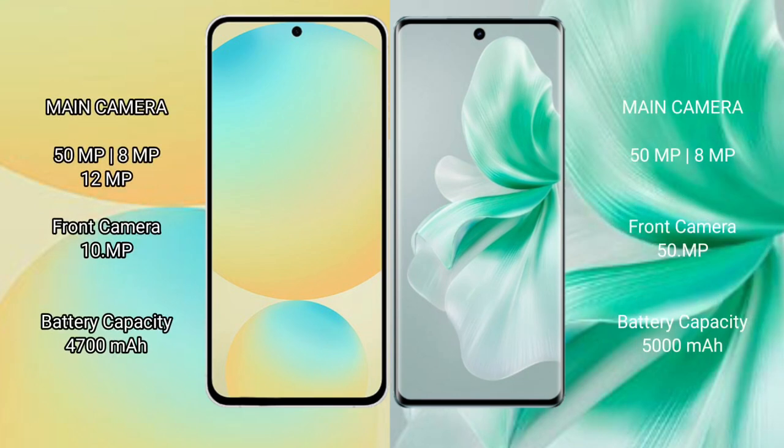Samsung Galaxy S24 FE features a rear triple camera setup: 50MP plus 8MP plus 12MP, with a 10MP front camera. Vivo V18 features a dual rear camera setup: 50MP plus 8MP, with a 50MP front camera.